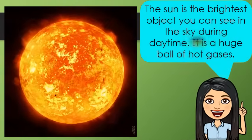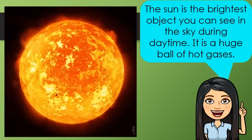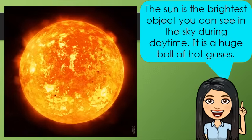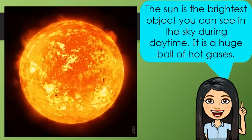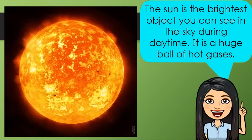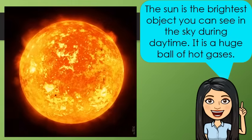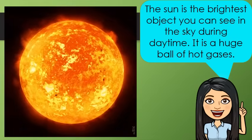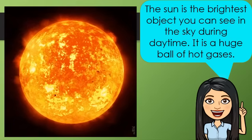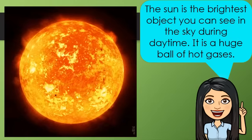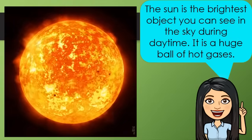The sun. It is considered as the brightest object you can see in the sky during daytime. It is a huge ball of hot gases. The sun is one of the billion stars in the galaxy. It looks bigger and brighter because it is close to Earth than any other star. It makes its own light and heat. The energy coming from the sun is called solar energy.